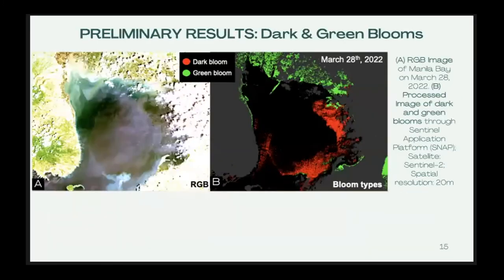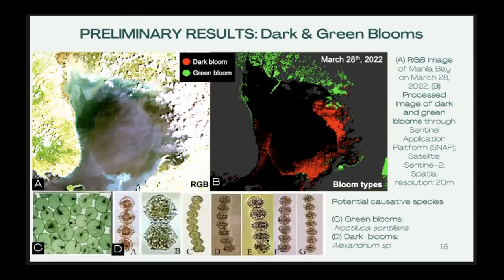With the initial data processing, we were able to detect two major potential types of blooms using Sentinel-2 imagery with high spatial resolution. Figure A shows the RGB image of Manila Bay on March 28th, and B is the corresponding processed image of darkened green blooms through the Sentinel application platform. Two colors appear in figure B corresponding to the water color and bloom type: red patches are the dark blooms, and green patches are the green blooms. These are the dominant blooms in the study area, potentially caused by dinoflagellate organisms — Noctiluca scintillans for the green blooms and Alexandrium species for the dark blooms.